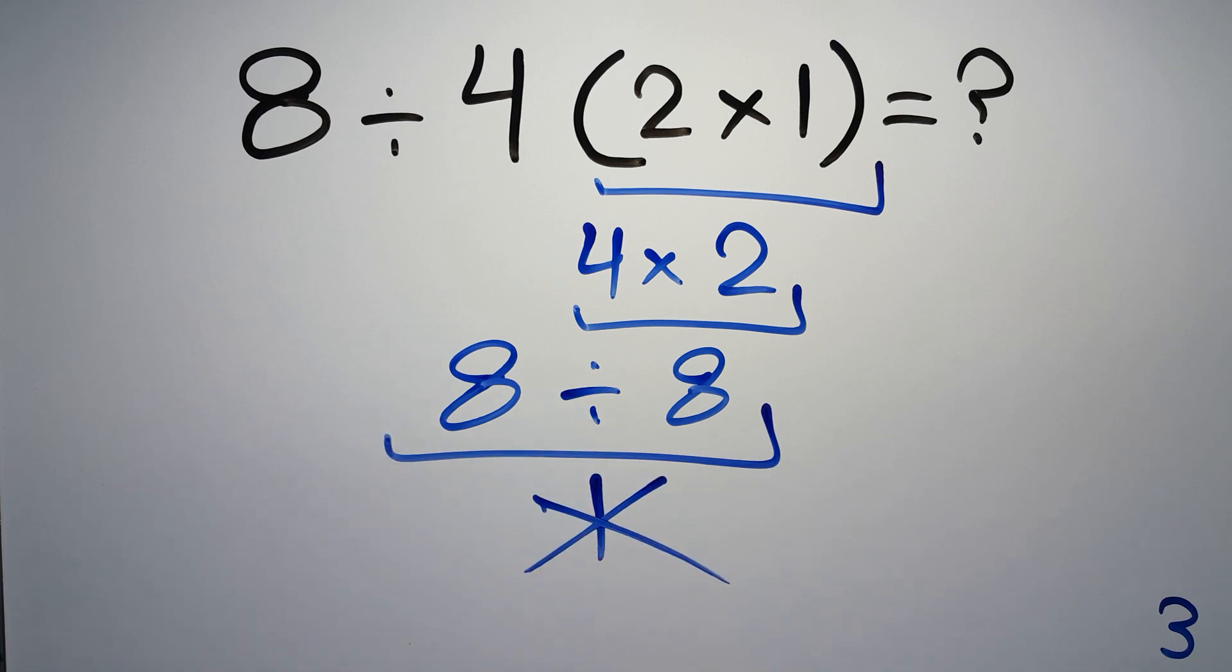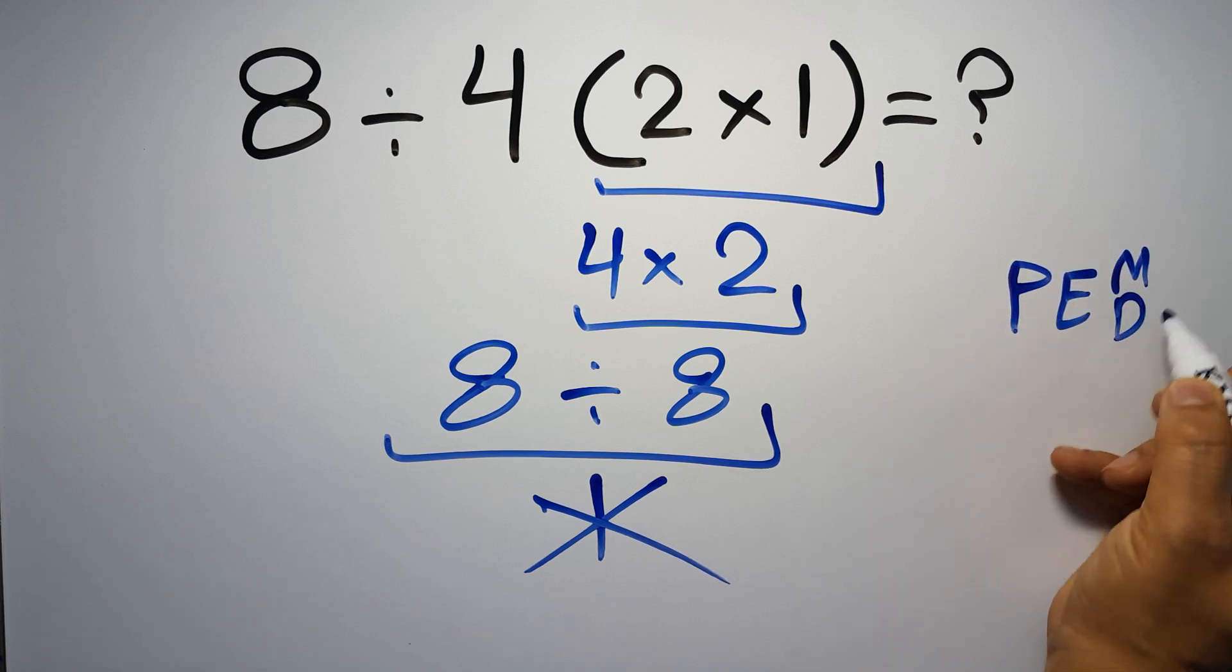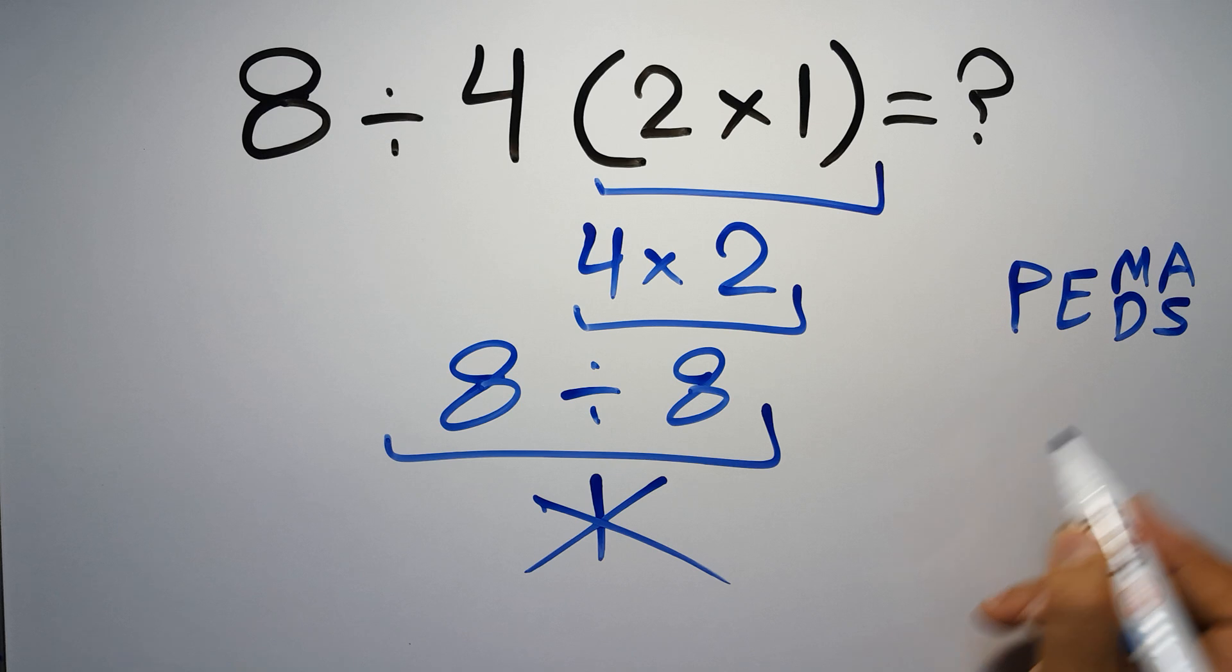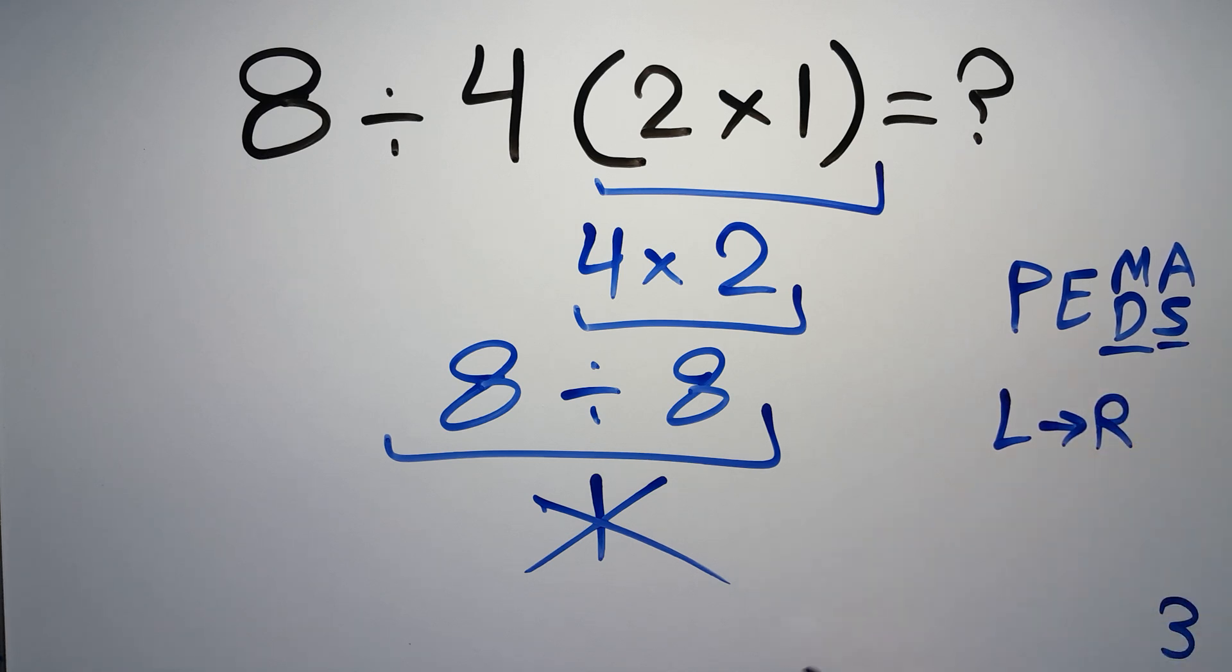Because according to the order of operations, first we have to do parentheses, then exponents, then multiplication or division, and finally addition or subtraction. Remember that multiplication and division have equal priority, and we have to work from left to right, and the same applies to addition and subtraction.